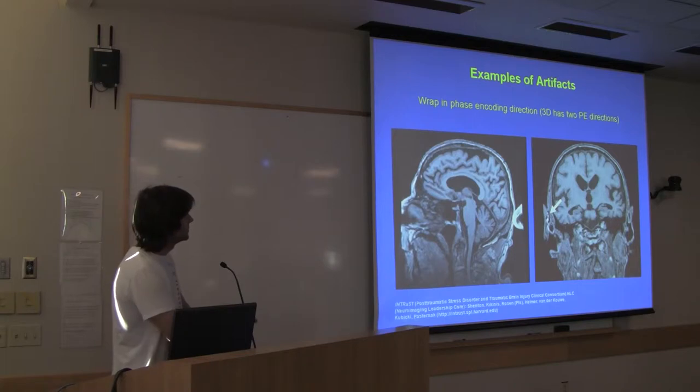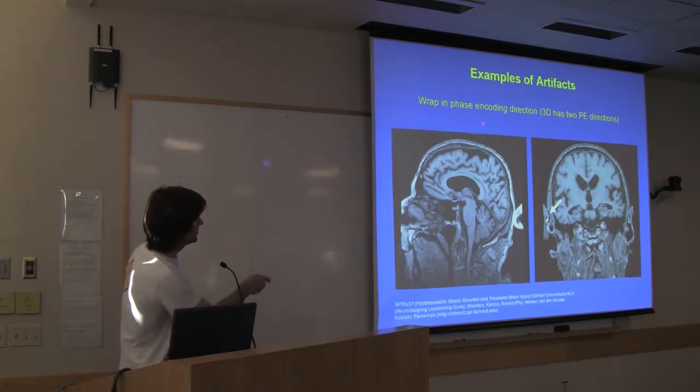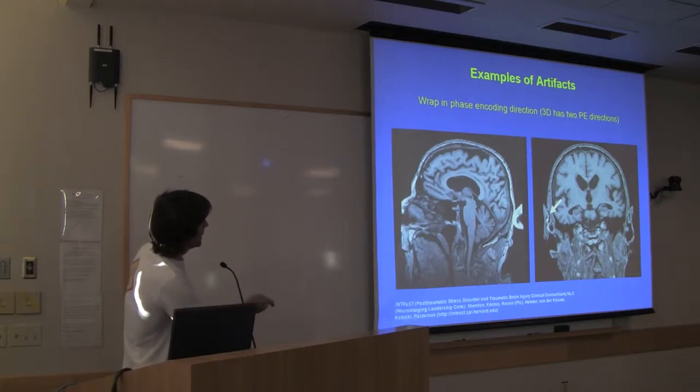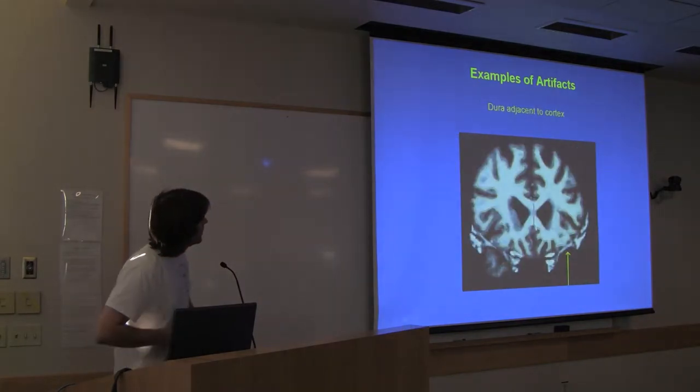The point of this slide is just to remind you that a 3D encoded sequence has two phase encode directions. And it's wrapped in both of those directions. So the readout is head-foot. And for free, you get rid of the wrap. There's not going to be a wrap of the neck up there. Because this is the readout direction. And it's twice oversampled. But in this phase coding direction, and in this phase coding direction, there's potentially a wrap. So you have to make sure your field of view is big enough. So you don't get wrapping if there's another person there in the scanner.